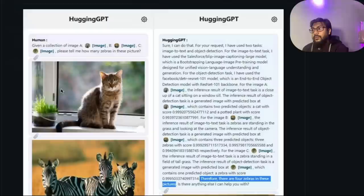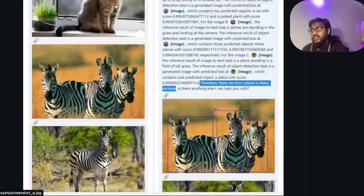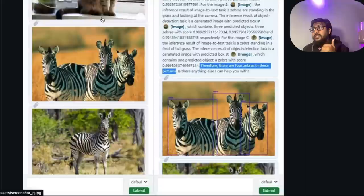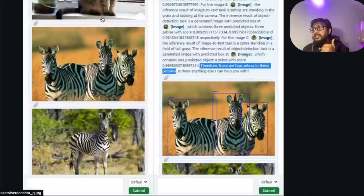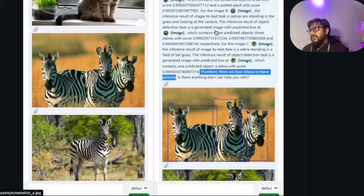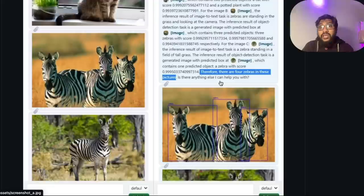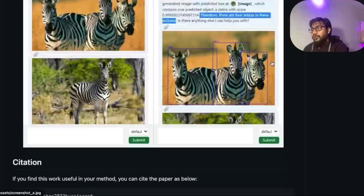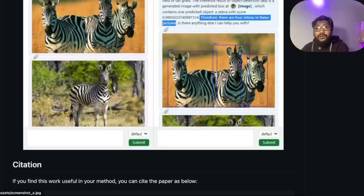The future is quite exciting. I'm not sure where it is going to end. You can give an input as a human: given a collection of images A, B, C, please tell me how many zebras are in this picture. There are three images that are given. One is a cat's image, second one is a zebra's image, and the third one is like three zebras' image. And it actually says sure I can do that and gives a lot of information and finally says there are four zebras in this picture. GPT-4 was launched with multimodal capability, but it almost looks like people have figured out how to get that multimodal capability without having GPT-4's multimodal capability. People are still using GPT-4 or GPT-3.5, which is only text at this point, but they have figured out a way to connect with existing systems like HuggingFace Model Hub to get this done.